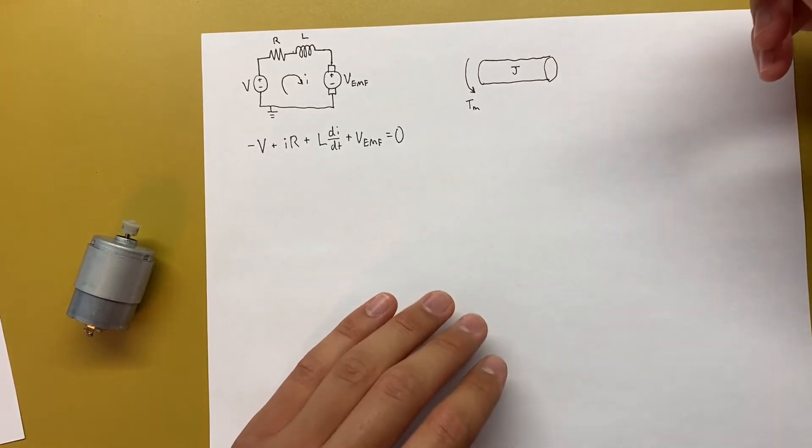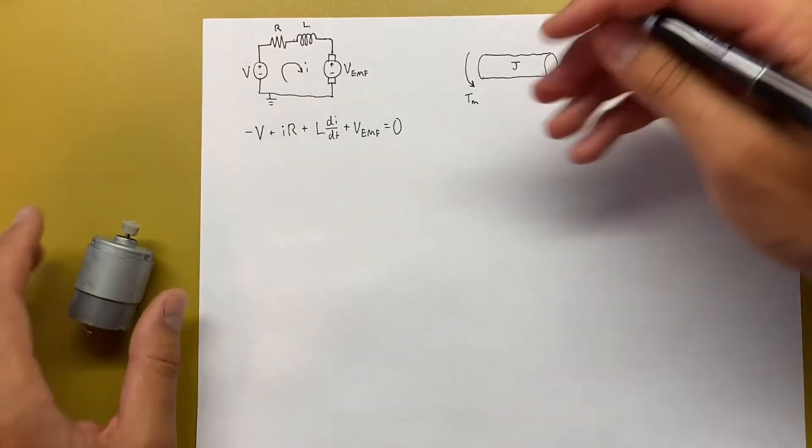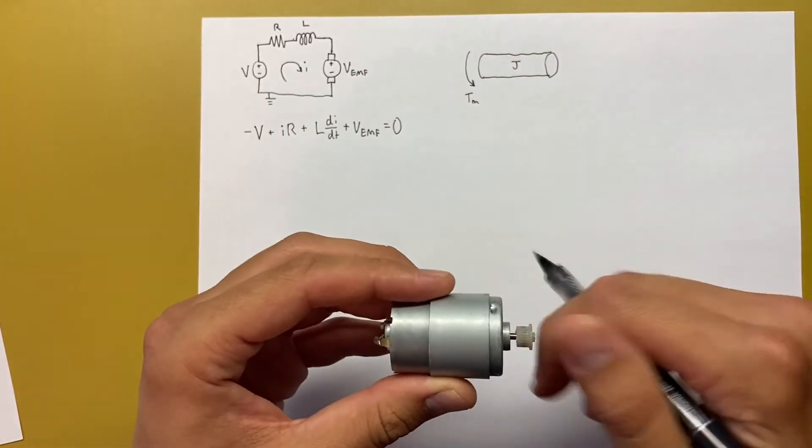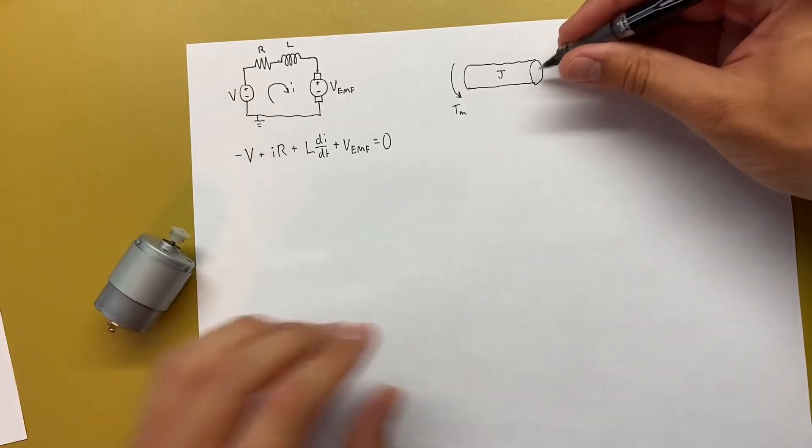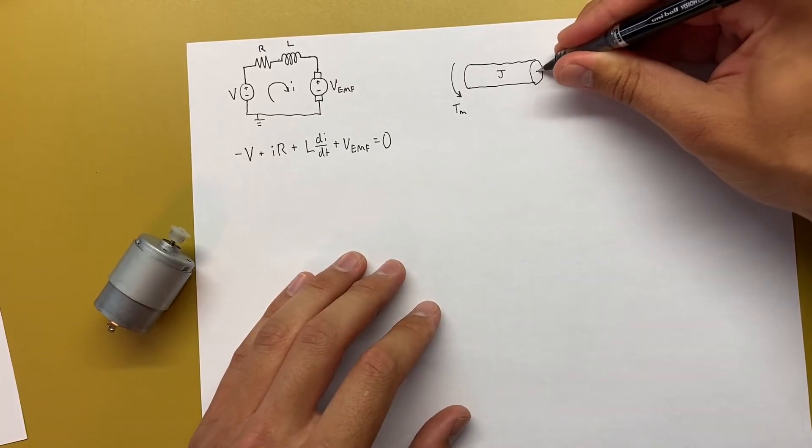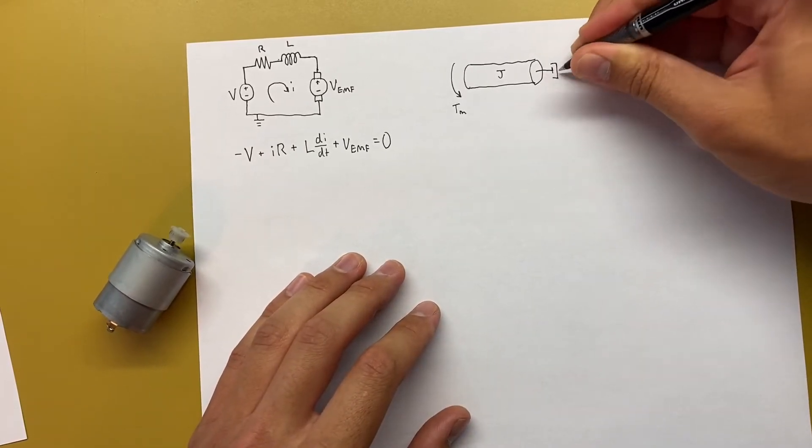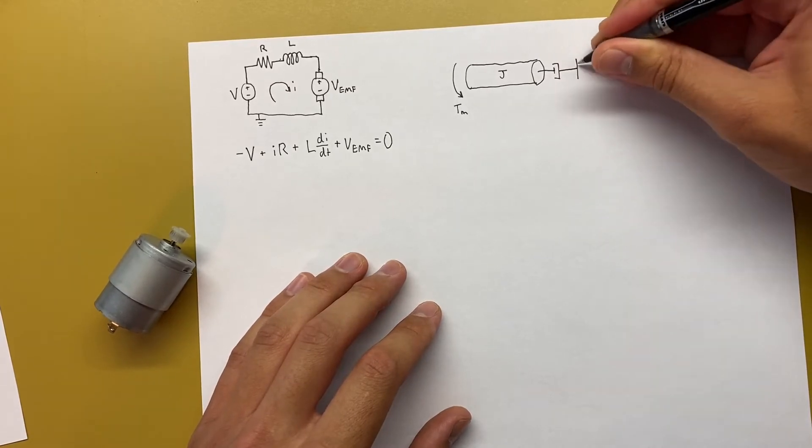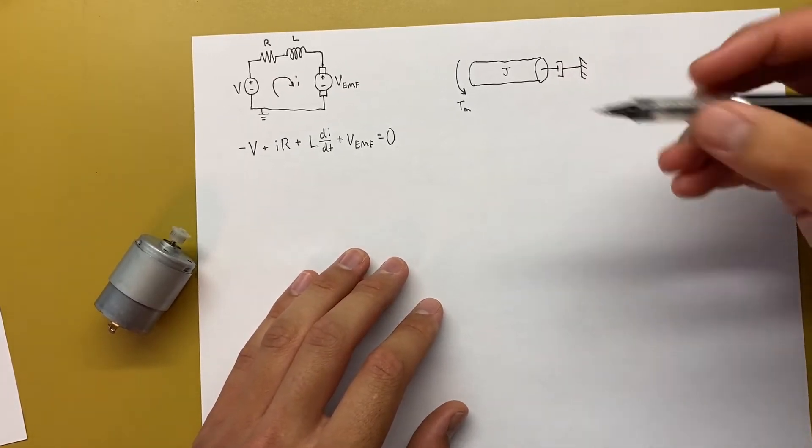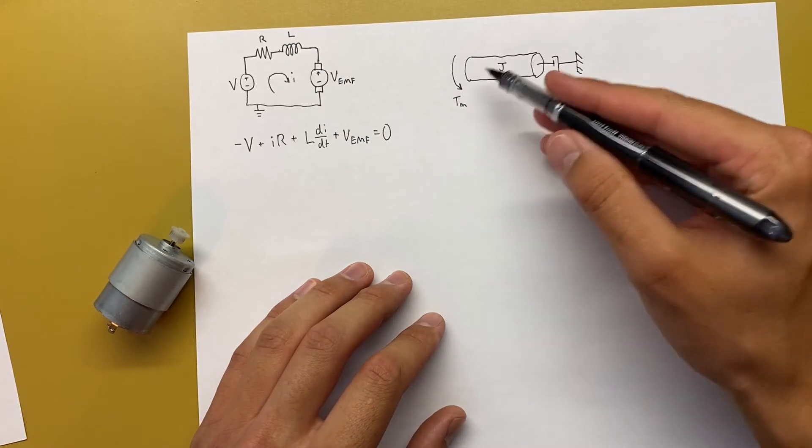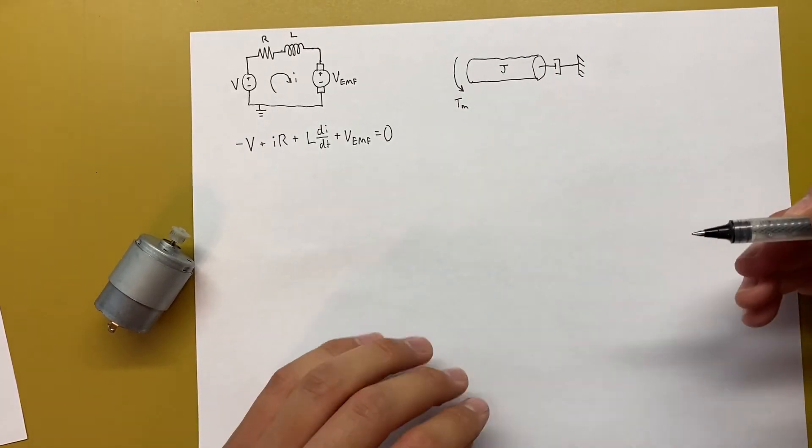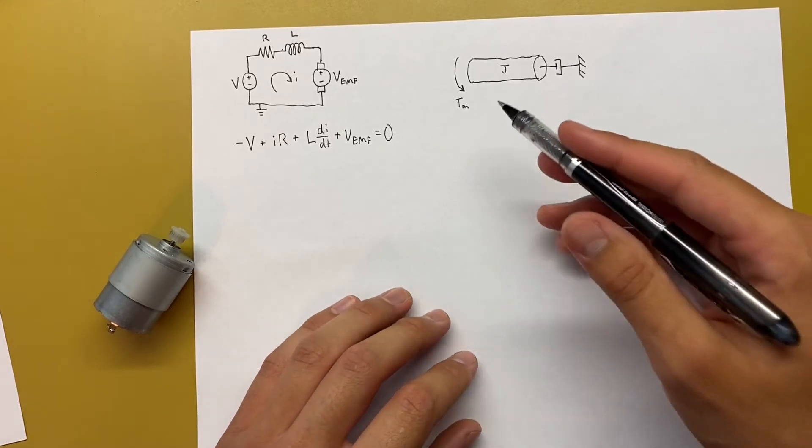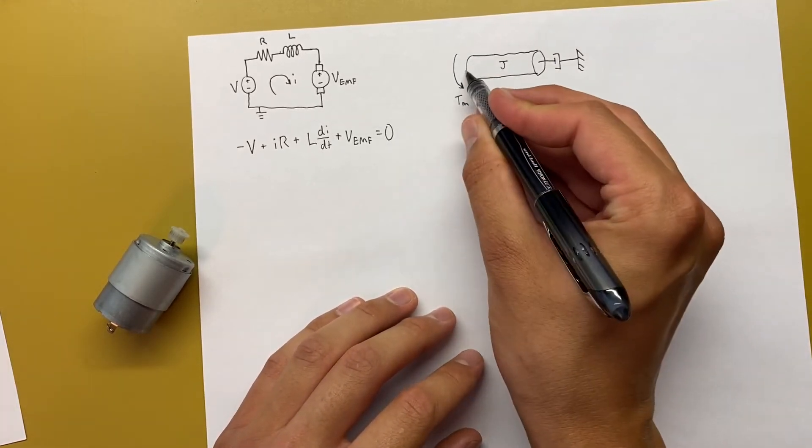And we also know that if you turn this, it doesn't spin forever. So there has to be some sort of friction in there. And we can go ahead and represent that with a damper. So we can draw that in here, and the other end will just connect to ground. And some people might draw this friction as a bunch of little X's down here or something, and that's fine too. Do whatever you feel the most comfortable with. So this is it for the mechanical side of it.